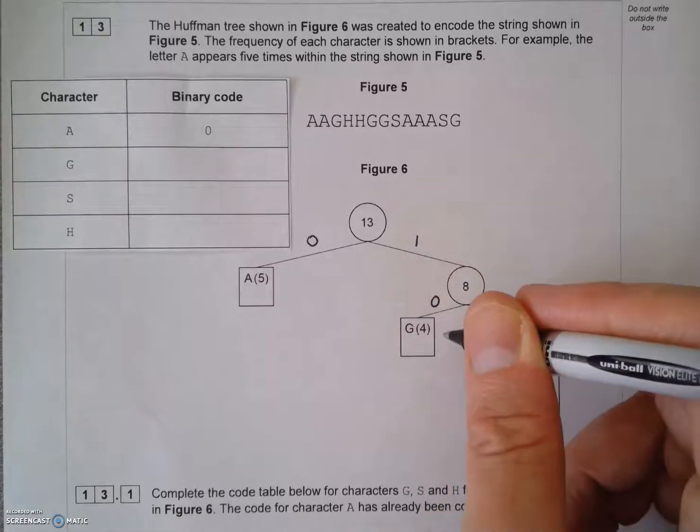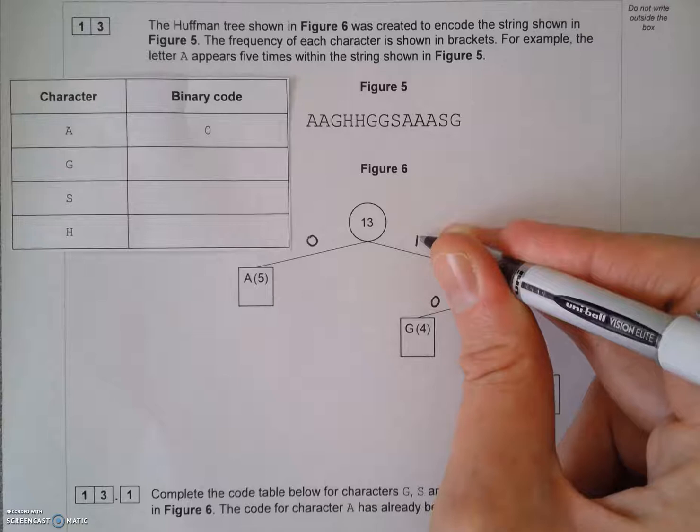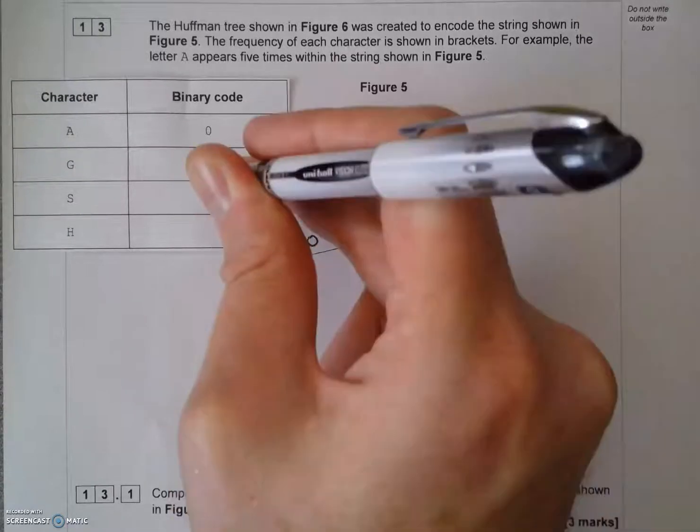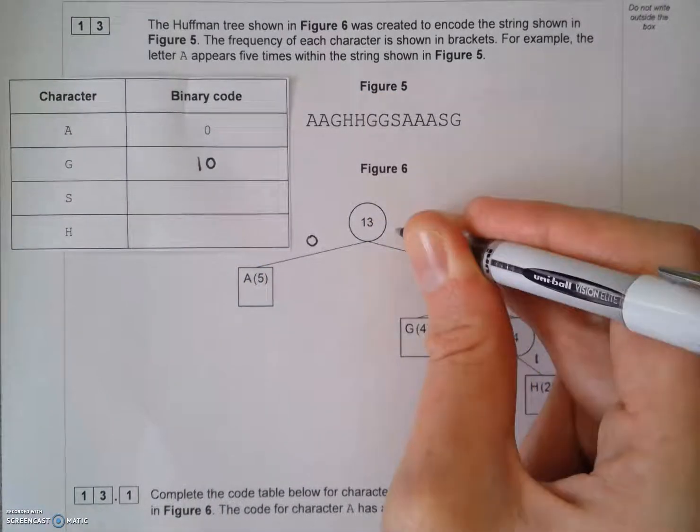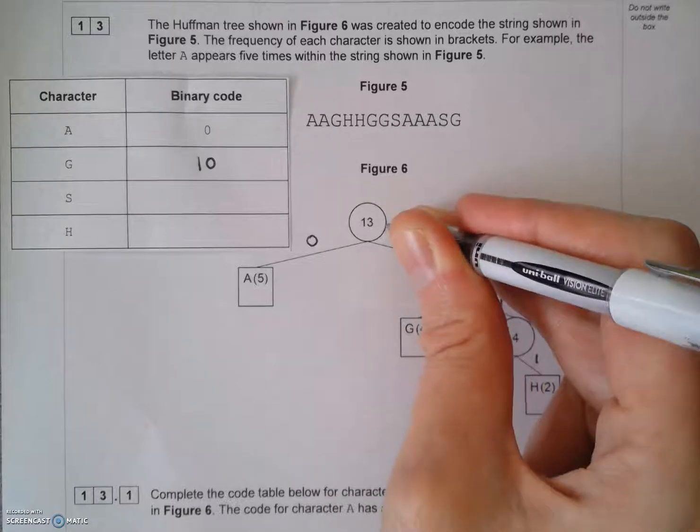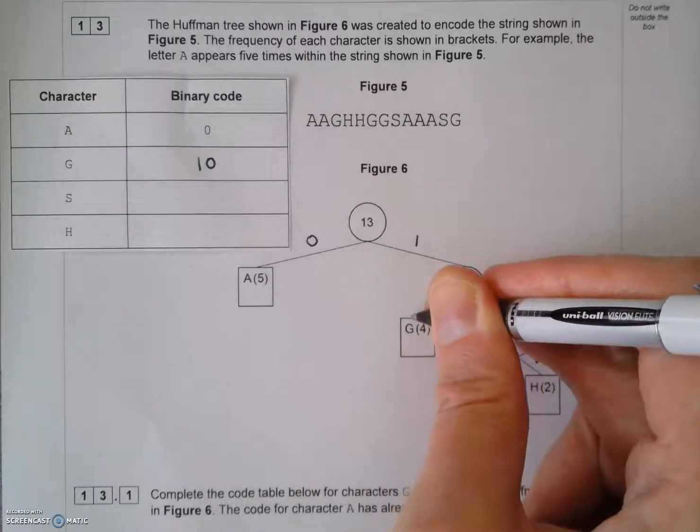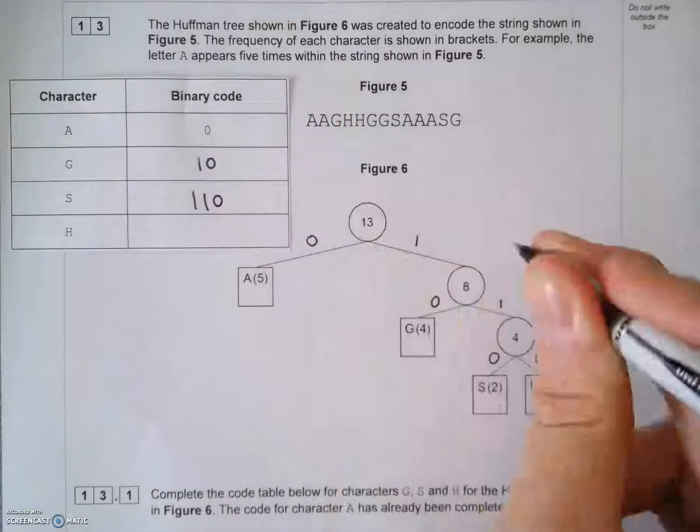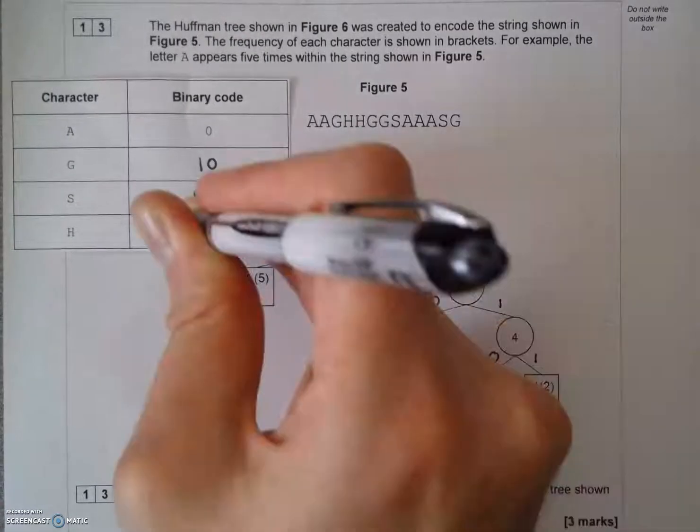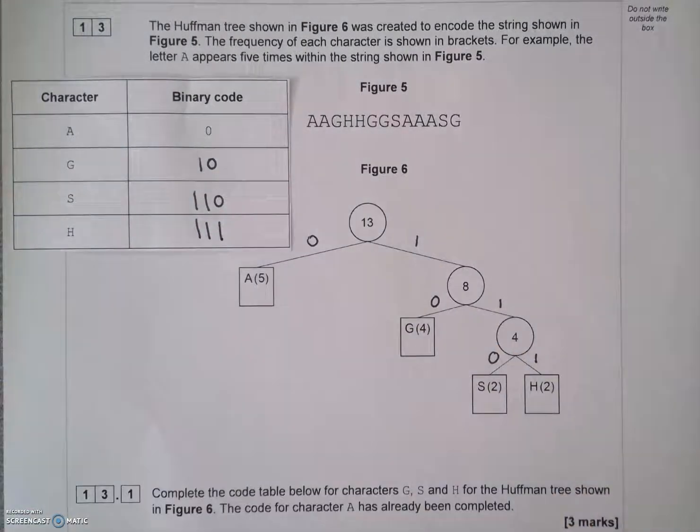So, now I can look at G. G is 1, and then 0. So, I'll write down 1, 0 like that. Because it's 1, there, and 0. It's like a pathway to get to it. What I had to go down, root 1, and then root 0 to get to G. What about S then? 1, 1, 0. And H is 1, 1, 1. So, that has given me three marks for just labelling my branches there, and being able to write down in this table the different Huffman codes, the binary codes for these different characters.